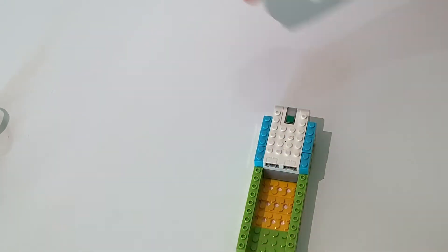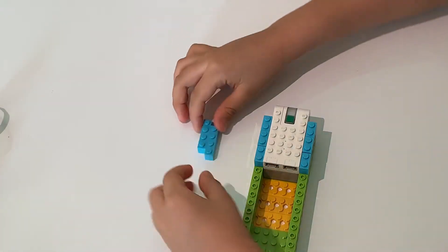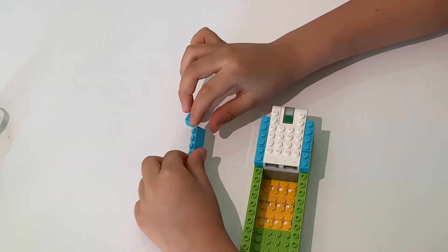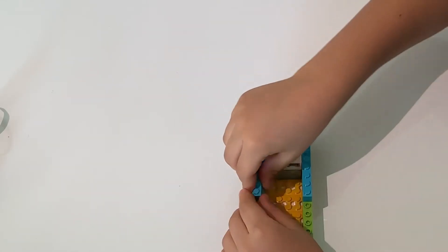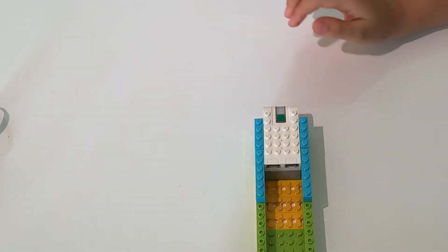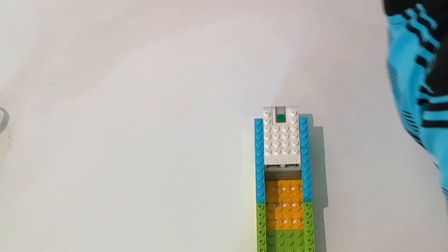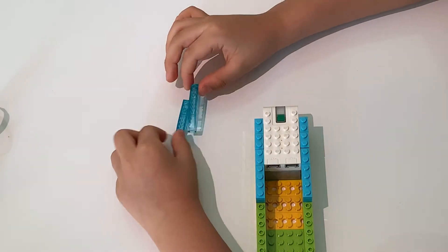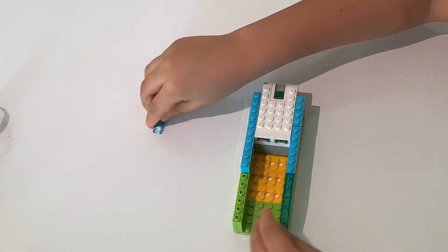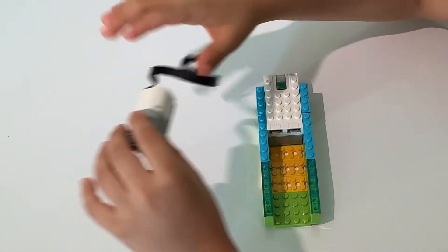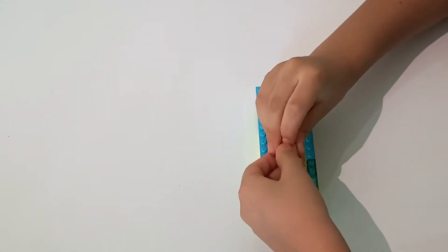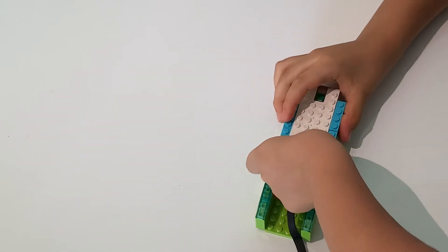So now, we'll grab the bigger four dot long blue pieces, place them here, and here. Now, it's time for the motor that we will connect to the smart hub with this cable here.